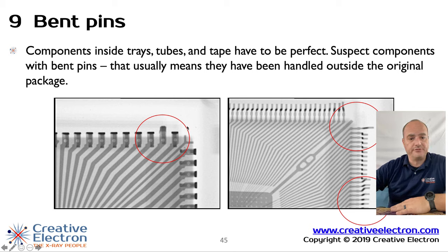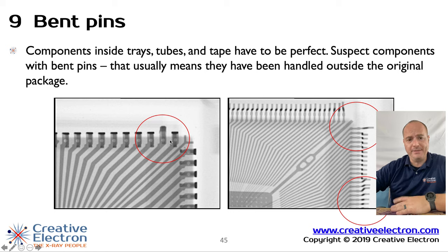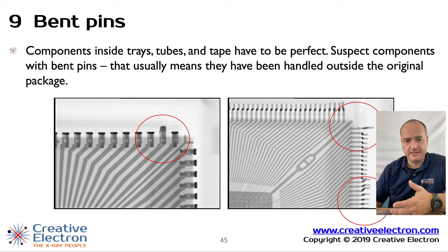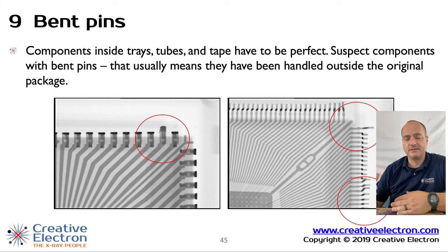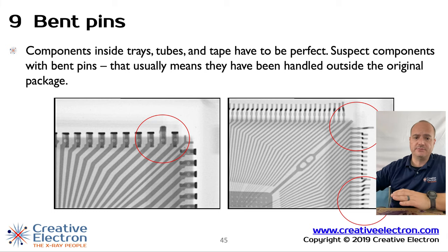Another example of how improper transportation and storage can trigger a counterfeit event: bent pins. If you're properly storing components on trays and tubes, you shouldn't have any bent pins or damaged components — they have to be pristine. Bent pins mean that at some point in the supply chain those components were improperly transported or handled, and you don't want anything to do with them.